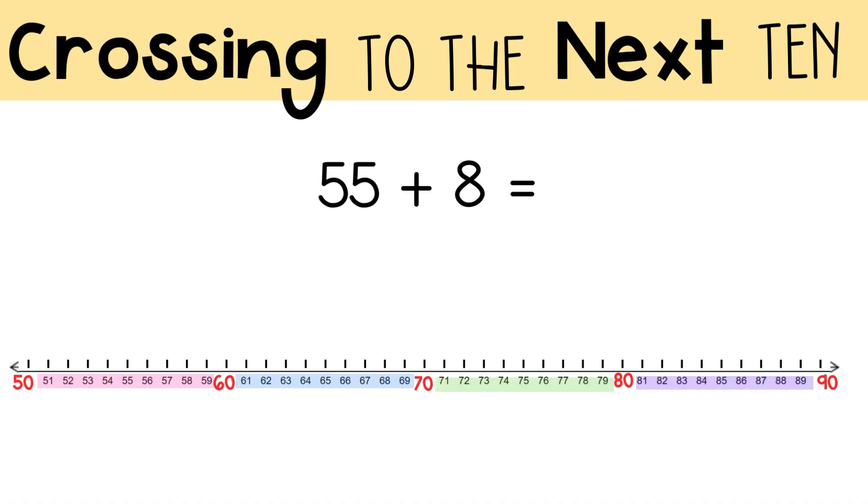Okay, let's do one more together before you work on some on your own. Here's 55 plus 8. First, let's start at 55. Think about whether you will be crossing a ten. If you are, how many jumps will you take to get to the next 10?